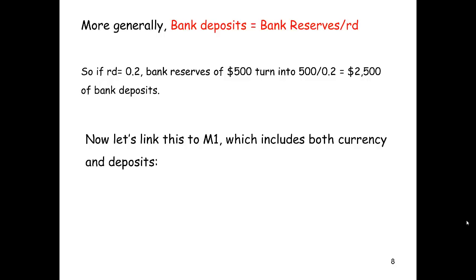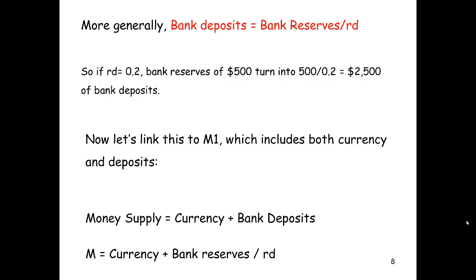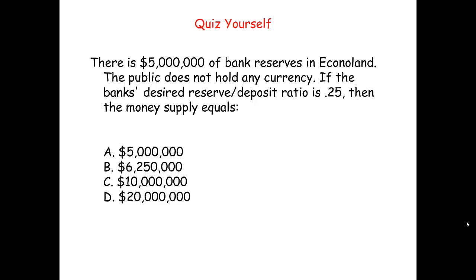Now let's link this to M1, which includes both currency and deposits. M1 money supply equals currency plus bank deposits, so M = currency + (bank reserves / reserve deposit ratio). Quiz yourself: there's $5 million of bank reserves in Econoland, the public holds no currency, and the bank's desired reserve deposit ratio is 0.25. The money supply equals $20 million — divide $5 million by 0.25 to get $20 million in deposits, which is the entire money supply since there's no currency.